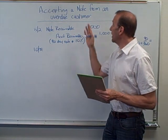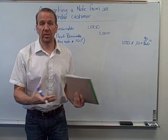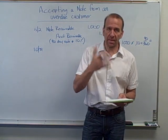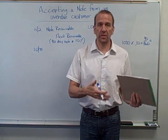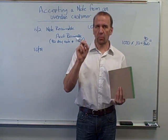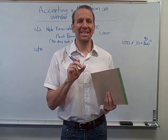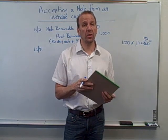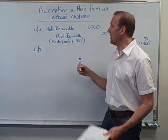We're going to look at accepting a note from an overdue customer. Our customers have accounts with us — that's an account receivable. If we sell something on account, we debit the account receivable and credit sales. We have a customer that owes us a thousand dollars, but they didn't pay us, so we're converting this — with an agreement — to a note receivable, meaning they're going to pay us later. We want to take it off the account receivable.